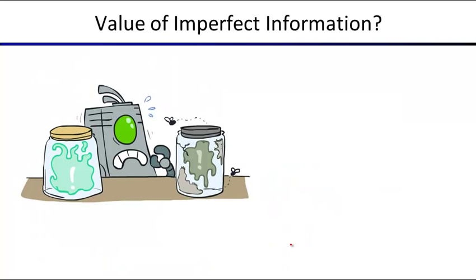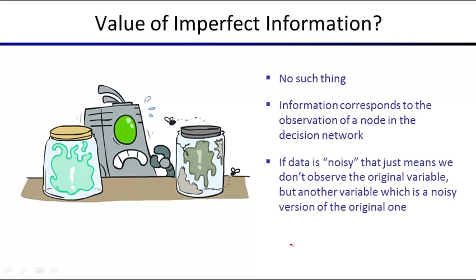What is the value of imperfect information? We're going to claim there is no such thing as imperfect information in our framework — our information is always going to be perfect. What if you have a sensory reading of the variable you really care about? Then what we look at is the value of perfect information of that sensory reading. Whatever is a noisy version of something else means we have an additional variable in the Bayes net that is a child of the original variable, and we can then compute the value of perfect information of that child variable.